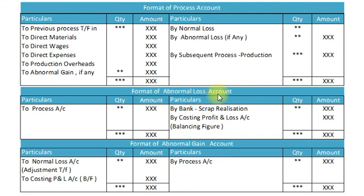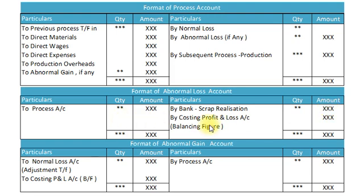Now we prepare the Abnormal Loss Account. Abnormal loss is recorded in the process account on the credit side. In the Abnormal Loss Account, on the debit side we record: to Process Account — quantity and amount. These abnormal loss units will be sold in the market as scrap, so on the credit side: by Bank — scrap realization, quantity and amount. The balancing figure on the credit side represents the loss, which is transferred to the Costing Profit and Loss Account, and the Abnormal Loss Account is then closed.